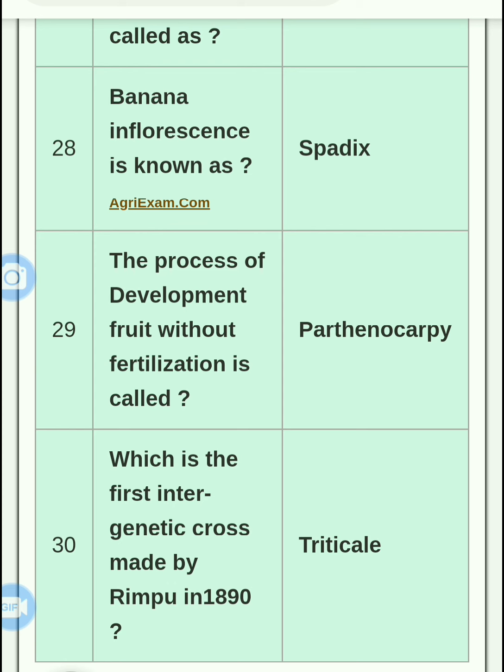The first intergeneric cross was made by Rimpo in 1890 — it was Triticale, which is a wheat and rye cross. This was the first intergeneric cross. These are important one-liner questions for plant breeding exams. After this, I will cover the next subject's questions. Thank you.